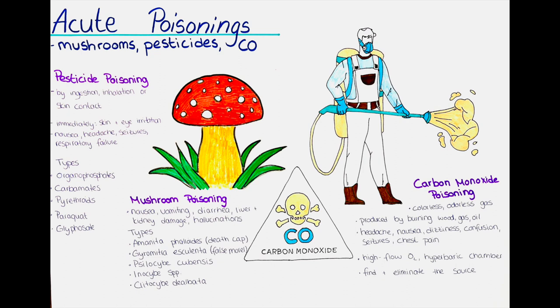In conclusion, acute poisoning is a serious medical emergency that requires prompt recognition and treatment. Pesticide poisoning, mushroom poisoning and carbon monoxide intoxication are just a few examples of the different types of acute poisoning that can occur in clinical practice. Healthcare professionals should be familiar with the signs, symptoms and appropriate treatment methods to provide optimal care to patients. It is also essential to educate the public on the prevention of acute poisoning to reduce the incidence of these life-threatening conditions. Thank you very much and hopefully see you again in the next video.